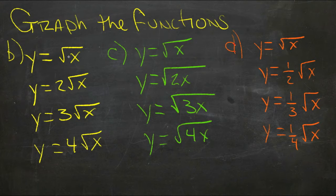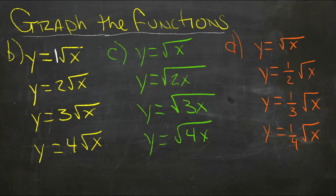I went ahead and wrote in the questions for examples b, c, and d here. They all ask you to graph a bunch of different functions that are all related. All of the functions in b are versions of some number times the square root of x, and it's asking you to graph each of these.